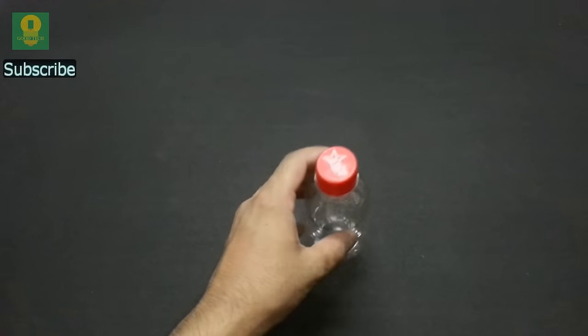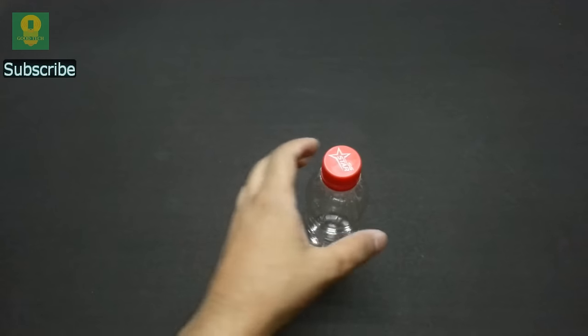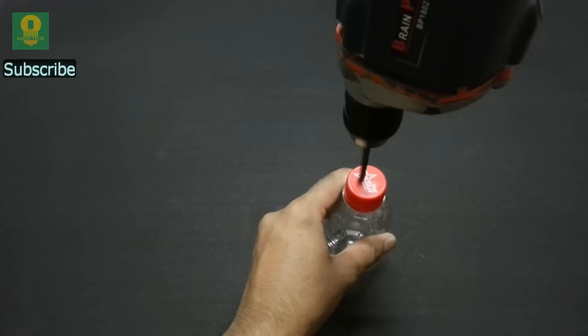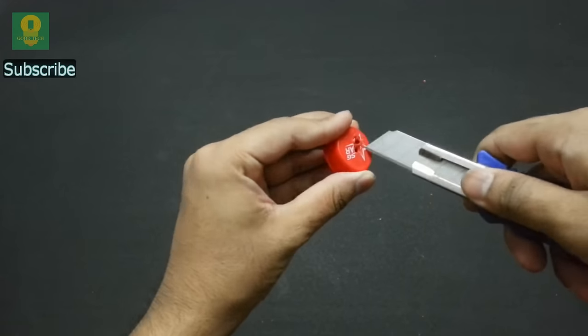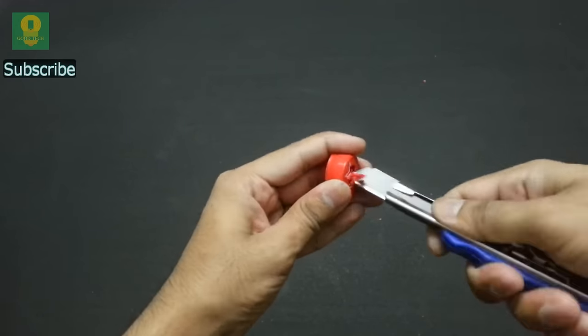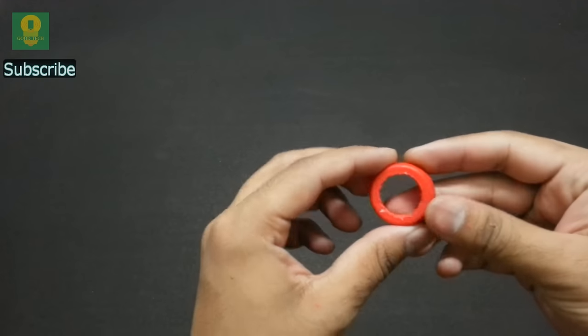To start, take a small plastic bottle, drill a hole in the cap and using a knife, make a cavity. We get a nice and smooth hole in the cap.